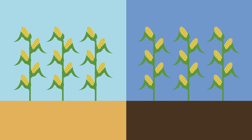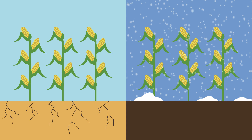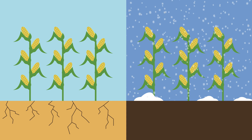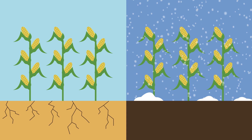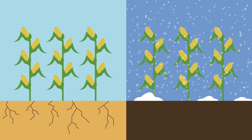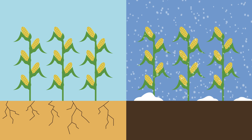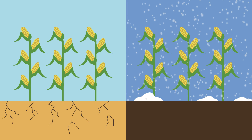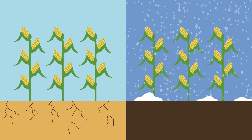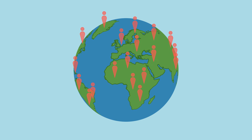Other examples of GM crops include those that grow in difficult conditions, such as drought or cold temperatures, and crops that are resistant to diseases. All of these genetic modifications mean we can either increase yields from existing farmland, or we can farm low-quality land, both of which help us to feed the ever-growing world population.